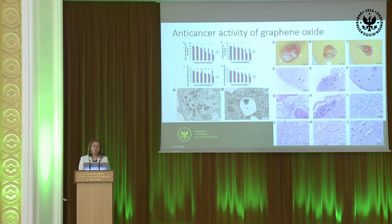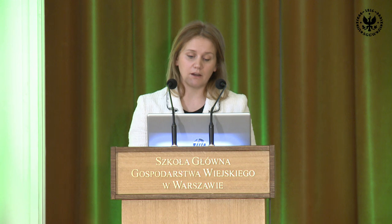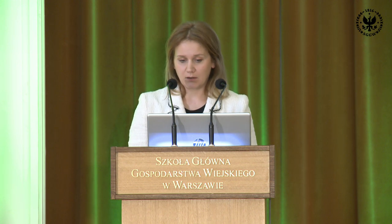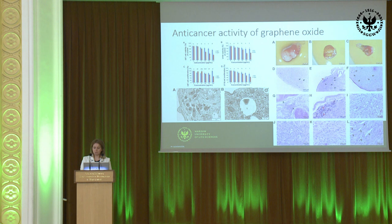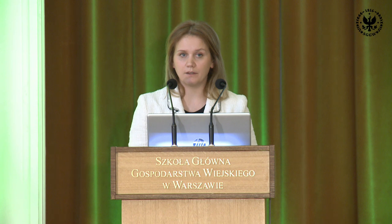We also verified the anti-cancer activity of graphene oxide against glioblastoma. Here we have tissue samples from the control and those treated with different types of graphene oxide. In all cases, the administration of graphene oxide caused a reduction in the size of the tumors and also limited cell viability. Taking this information together with the benefits of using microRNA, it can be more optimistic for future applications, especially for patients diagnosed with glioblastoma. So we decided to create complexes of graphene oxide with different types of microRNA.